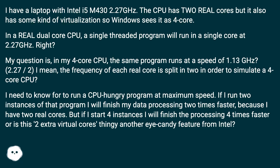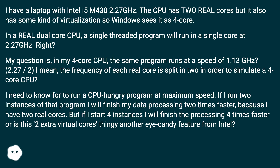In a real dual-core CPU, a single-threaded program will run in a single core at 2.27 GHz. My question is, in my 4-core CPU, does the same program run at a speed of 1.13 GHz?